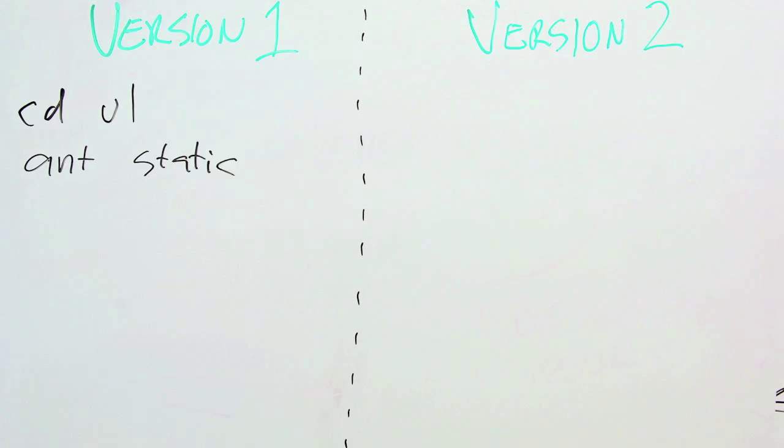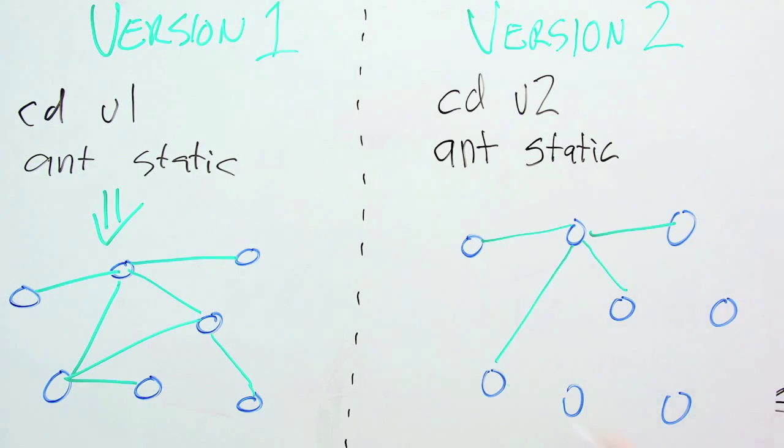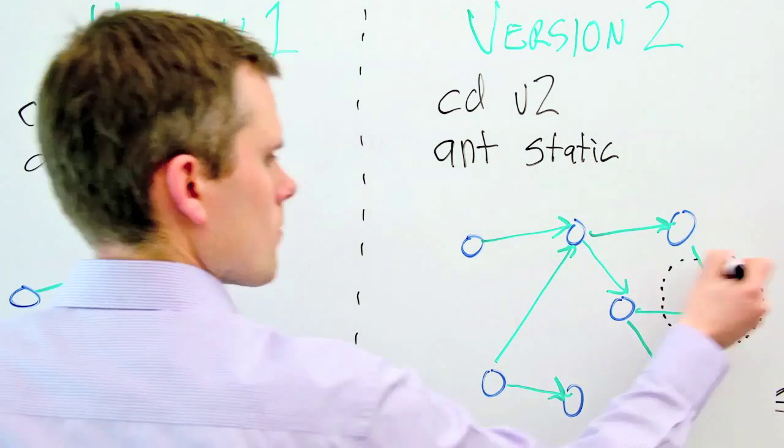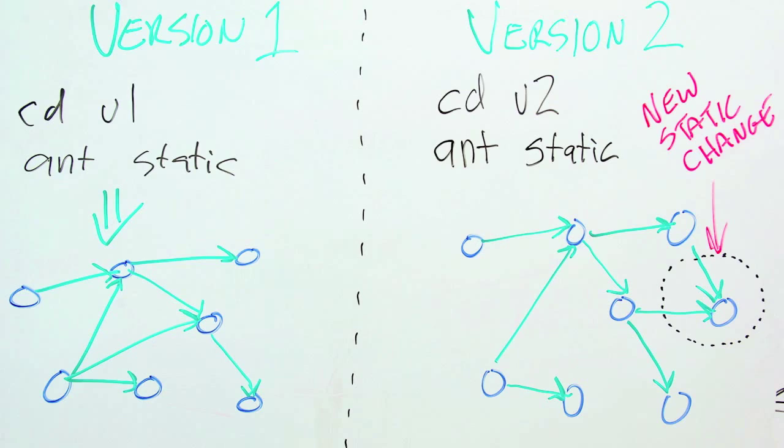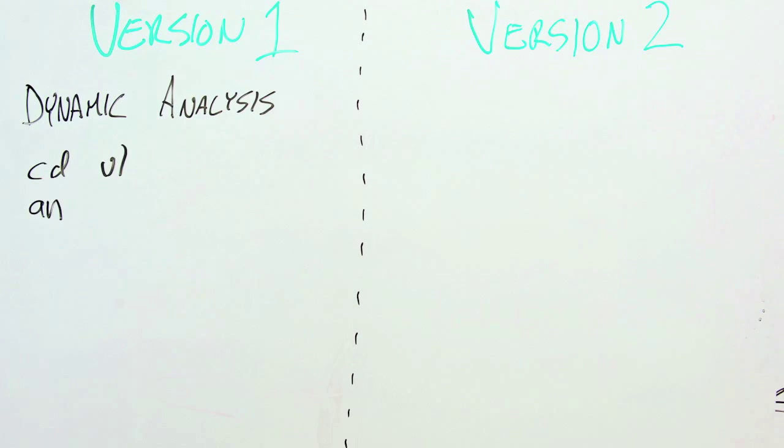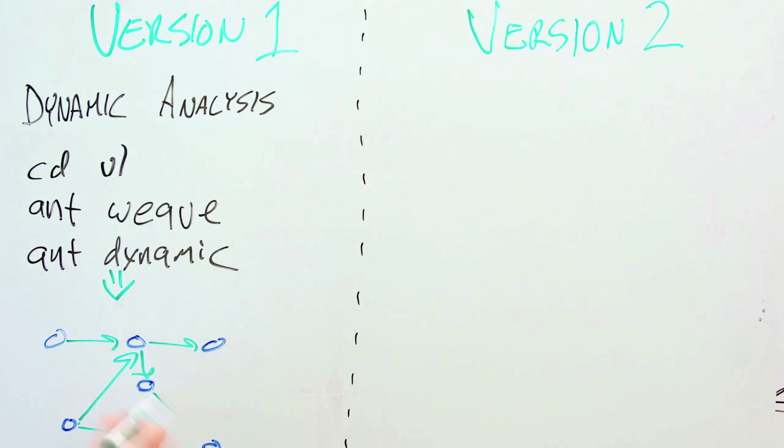We generate a static call graph for each version of the code using a static analysis tool. Our approach is analysis agnostic. Any static technique for generating a call graph can be applied. We also generate a dynamic call graph for each version by running the system's entire test suite and tracing its execution.